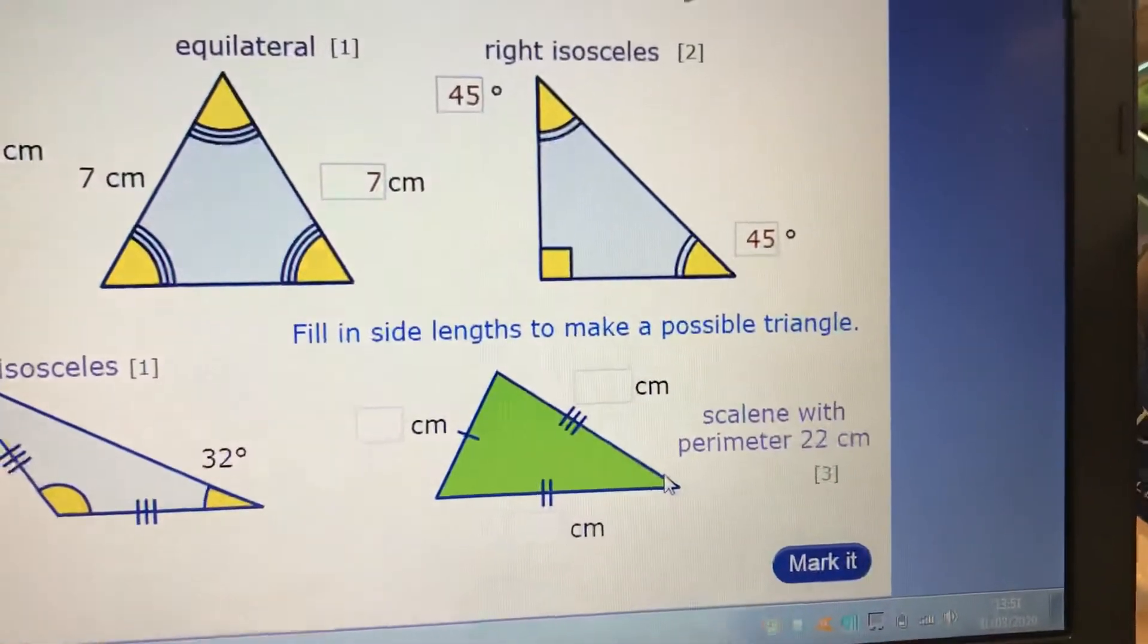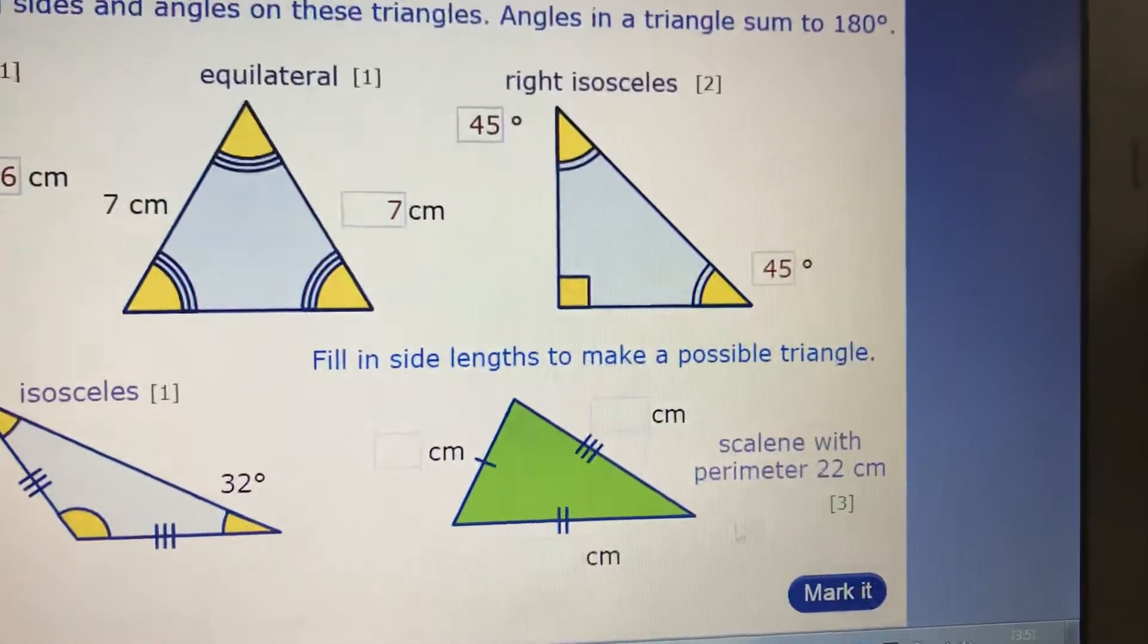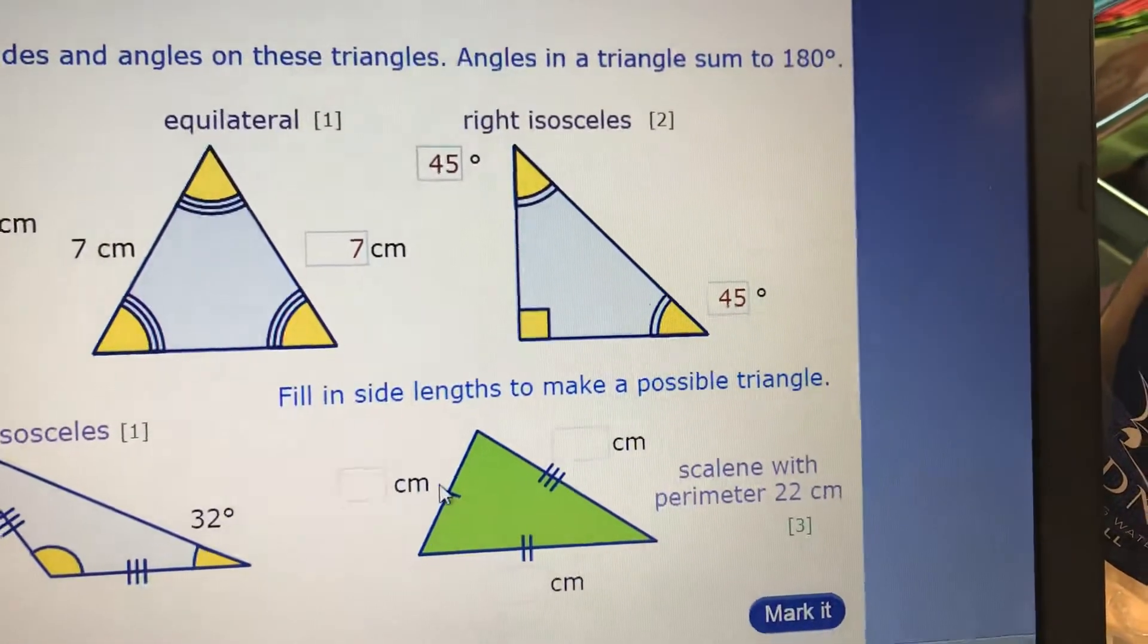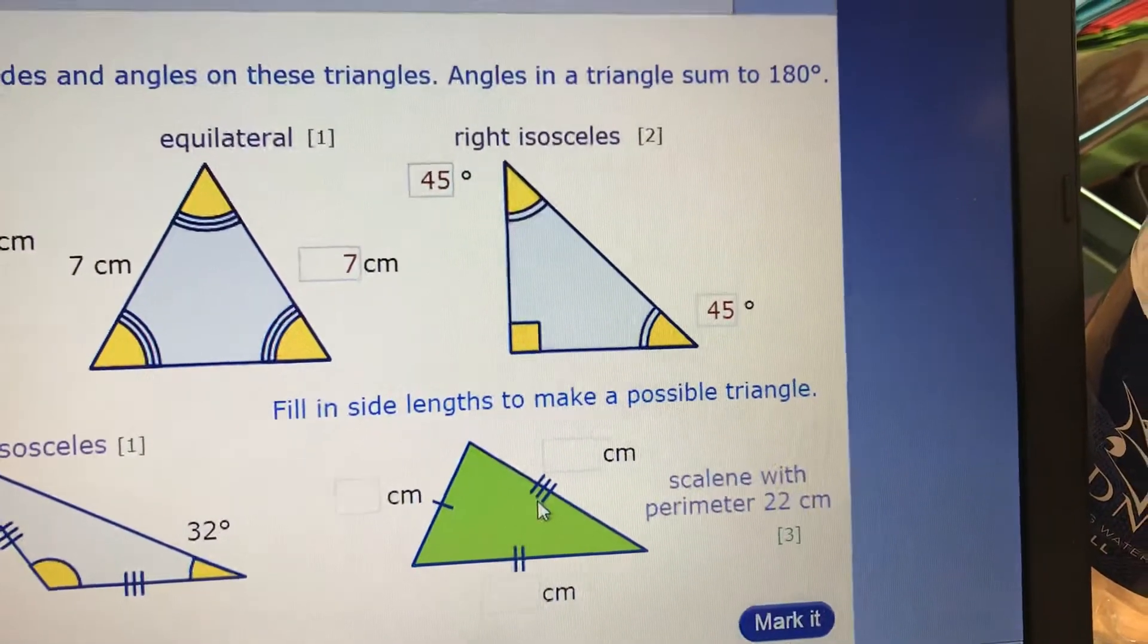Perimeter down here, you've got to find a scalene with a perimeter of 22. So a scalene, all sides different. I know it's all sides different because I've got one, two, three lines that are different here.